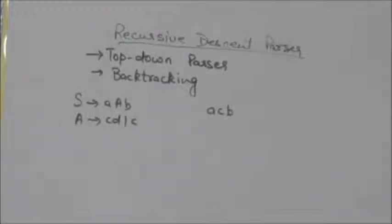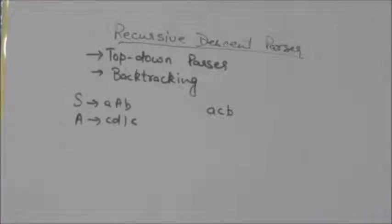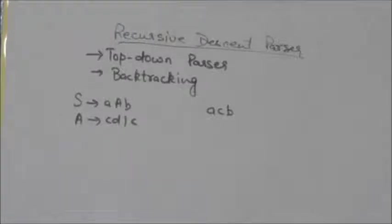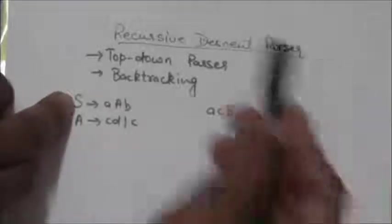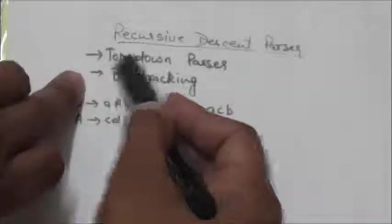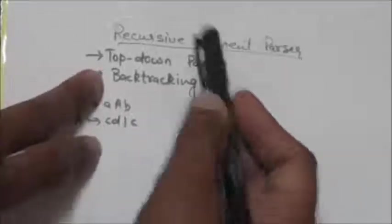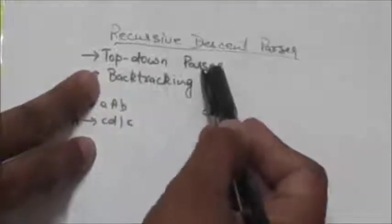Welcome back. In this tutorial we will study about recursive descent parser. The recursive descent parser is a top-down parser which uses backtracking. We have already studied in a previous tutorial what a parser does — the parser does syntax analysis. This recursive descent parser is a top-down parser.